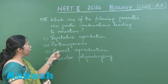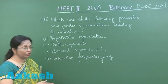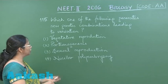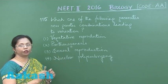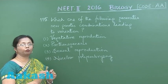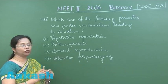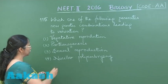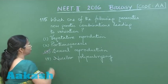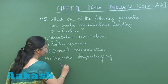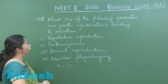Our only choice left is sexual reproduction, because during sexual reproduction there is formation of gametes by meiosis and as a result there is reshuffling of genes. So our answer is option number 3, and that is the correct answer.